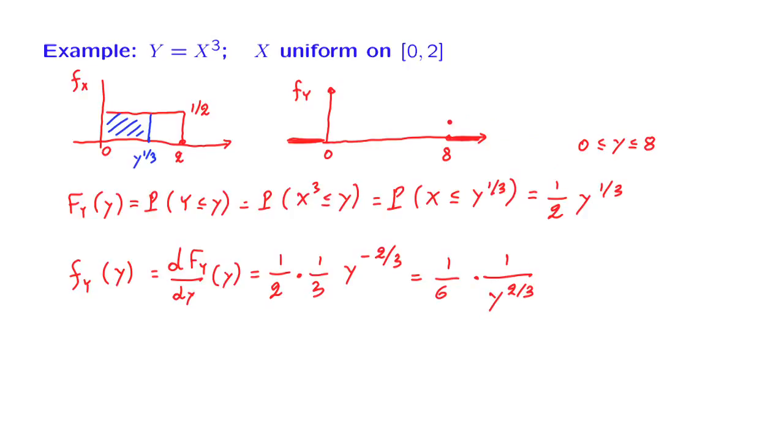So the form of this PDF is not a constant anymore. y is not a uniform random variable. The PDF becomes larger and larger as y approaches 0. And in fact, in this example, it even blows up when y becomes closer and closer to 0. So this is the shape of the PDF of y.